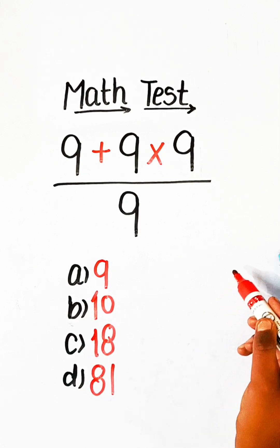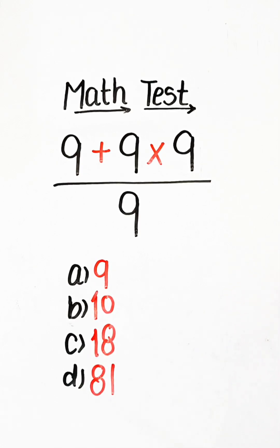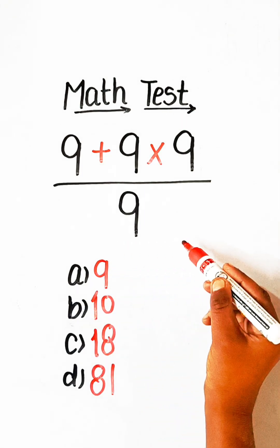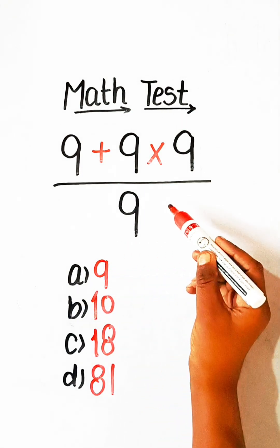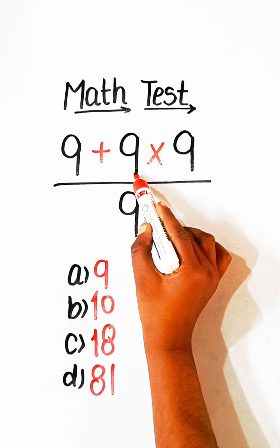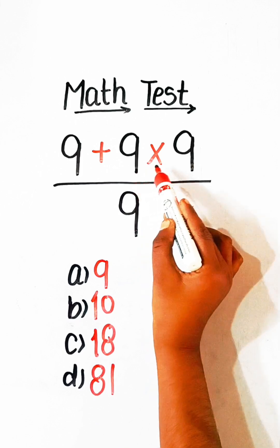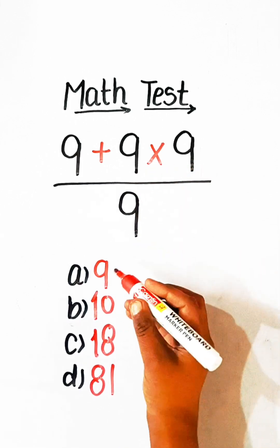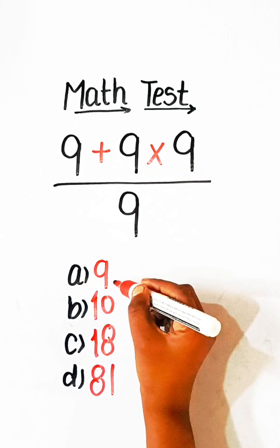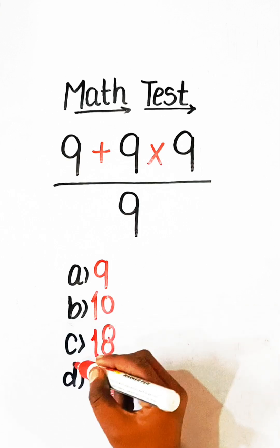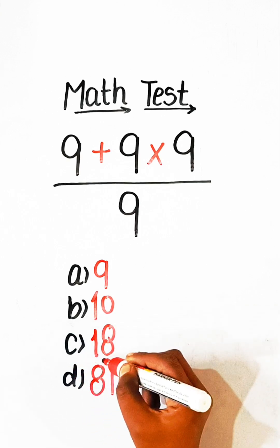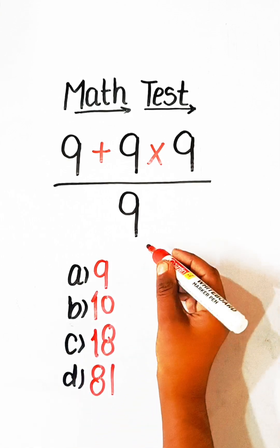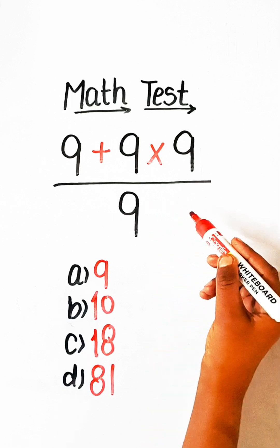Hello everyone, in this video we will solve this basic math equation: 9 plus 9 multiplied by 9 upon 9 equals to what? Option A: 9, Option B: 10, Option C: 18, Option D: 81. So let's solve this here.